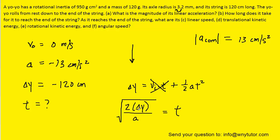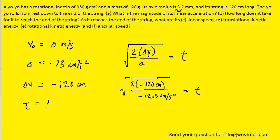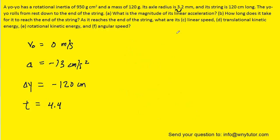At this point we can simply plug in the known values for the displacement and acceleration. For the acceleration, we've included the less rounded version to get some more accuracy for the time. When we crunch this down, we should get approximately 4.4 seconds for the time. So this would be the correct answer to part B.